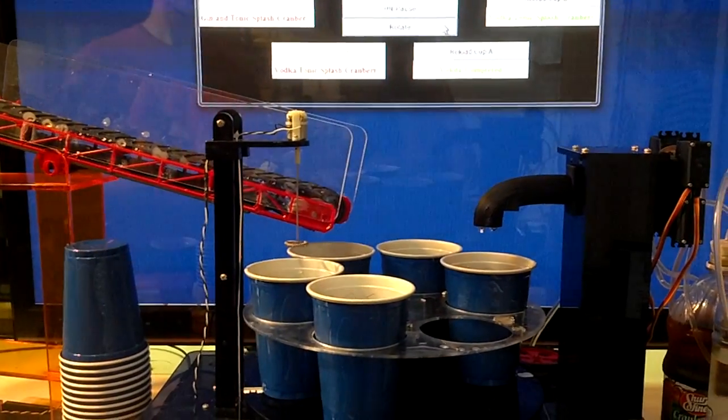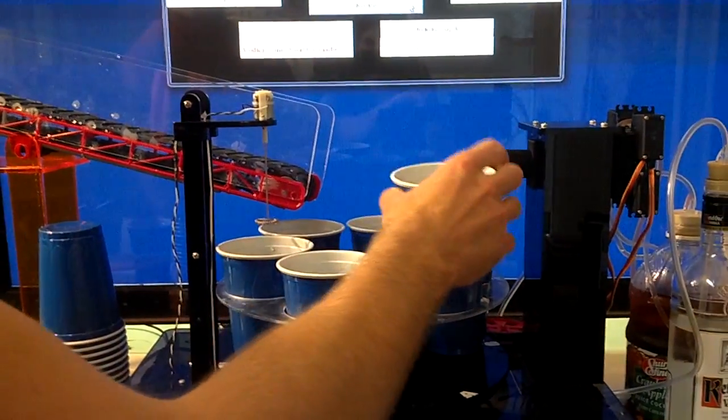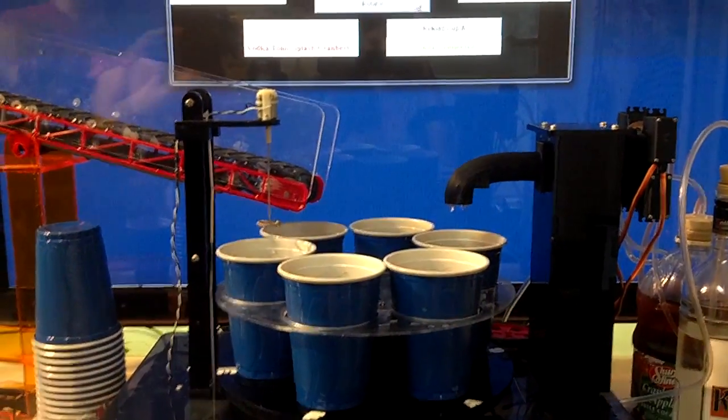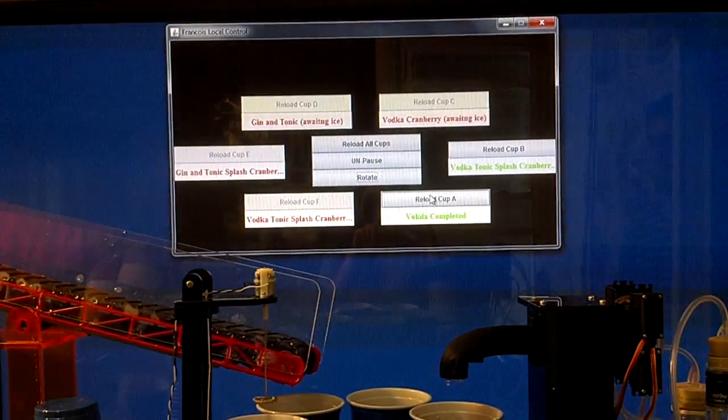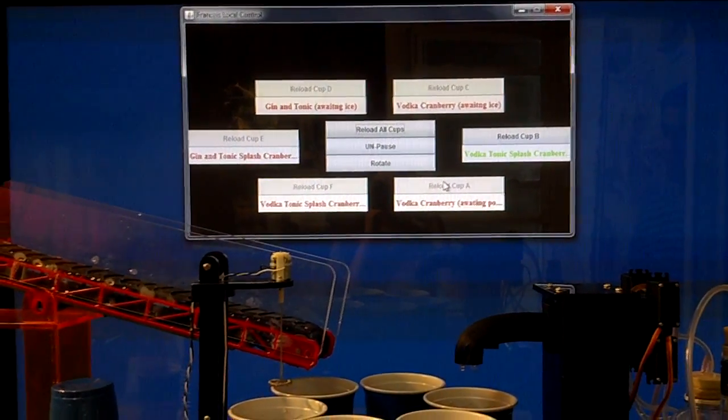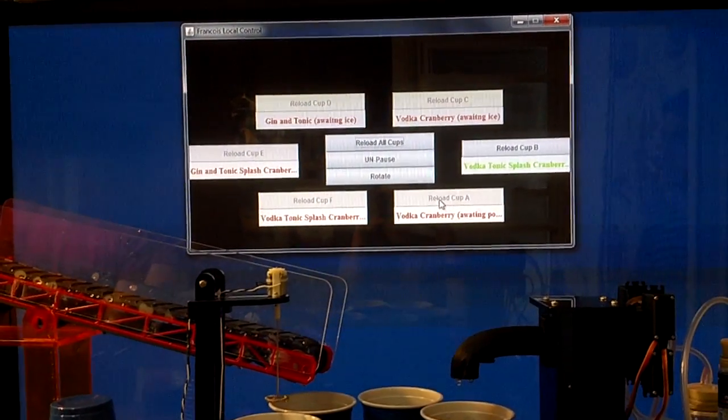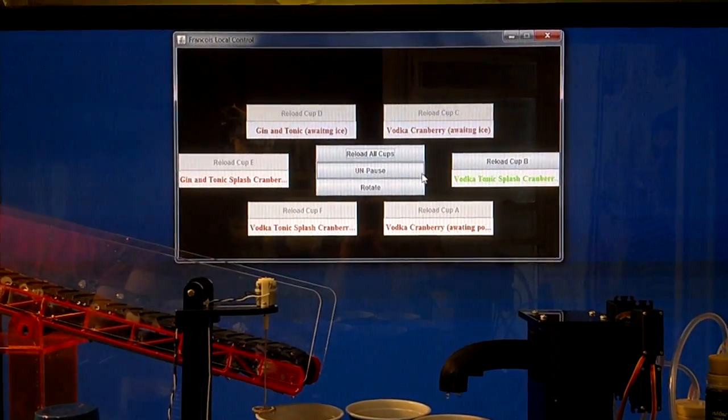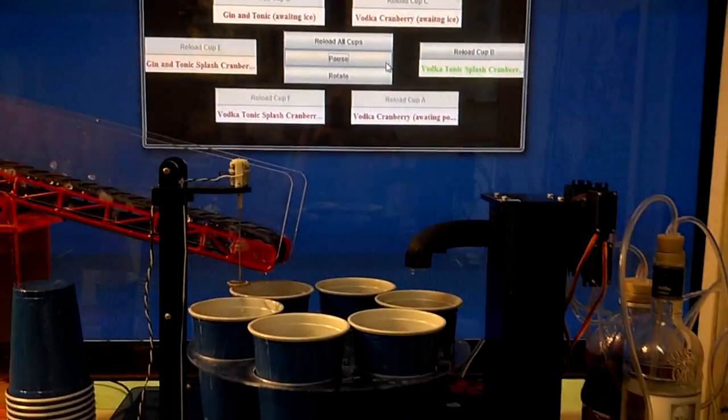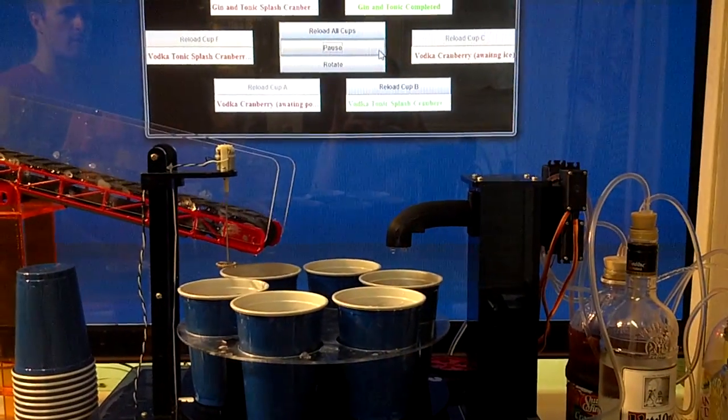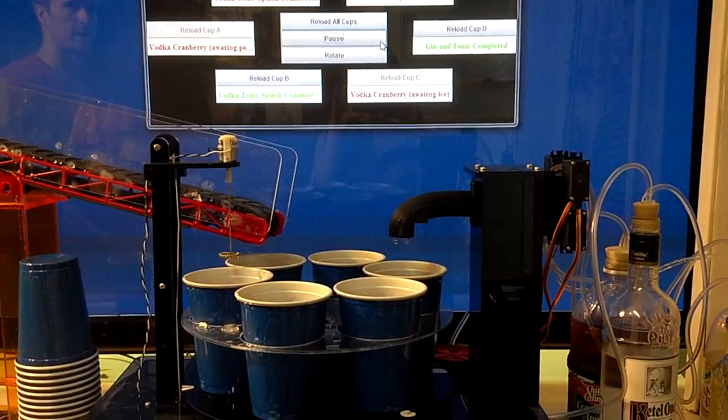However, now the system can make another drink as soon as we reload a cup and signal that there's an open space in slot A by clicking on the button. See, it's now assigned a vodka cranberry, and now that I've stopped putting cups in and pulling them out, we can unpause it, and it will continue making all the drinks that are next.